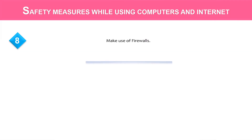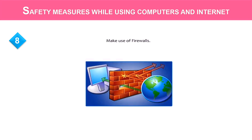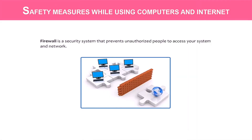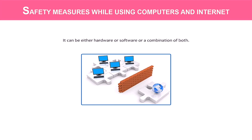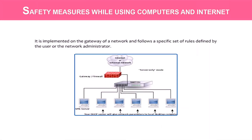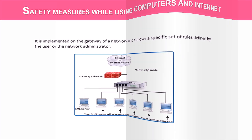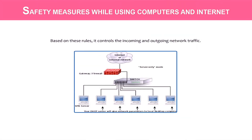Eight, make use of firewalls. A firewall is a security system that prevents unauthorized people from accessing your system and network. It can either be hardware or software, or a combination of both. It is implemented on the gateway of a network and follows a specific set of rules defined by the user or the network administrator. Based on these rules, it controls the incoming or outgoing network traffic.